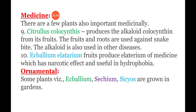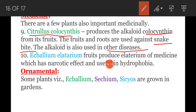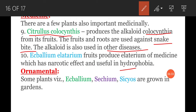Cucurbitaceae members are also used in medicinal fields. Citrullus colosynthes produces the alkaloid colocynthin from its fruits; the fruits and roots are used against snake bite, and the alkaloid is also used in other diseases. Ecballium elatarium produces elatarium medicine, which has narcotic effects and is useful in hydrophobia.